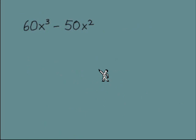Here's our next example: 60x³ minus 50x². We want to factor and we're looking for the GCF. My approach is to start with just the coefficients — looking at 60 and 50 and thinking about the biggest number that we could evenly divide out of both. 10 is going to be our best choice, so we have that out front.